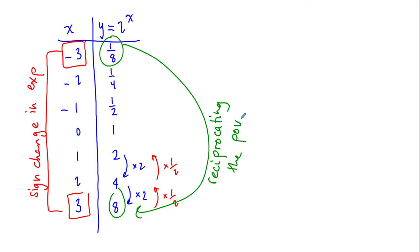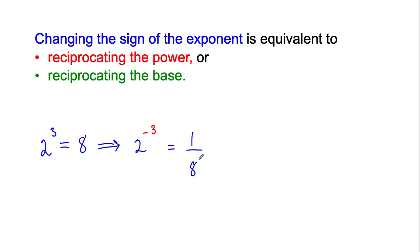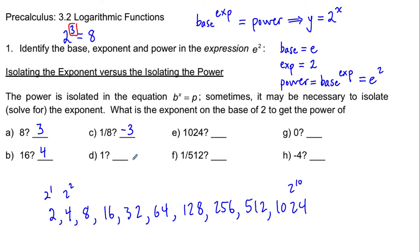What we see here is that if we change the sign of the exponent, we end up reciprocating the power. So a sign change in the exponent leads to reciprocating — flipping the fraction upside down. We can rewrite this in words: changing the sign of the exponent, so if I go from 2 to the 3 equals 8, changing the sign of the exponent ends up giving me 1 over 8, which is the same as reciprocating the power — also the same as one half to the exponent of 3.